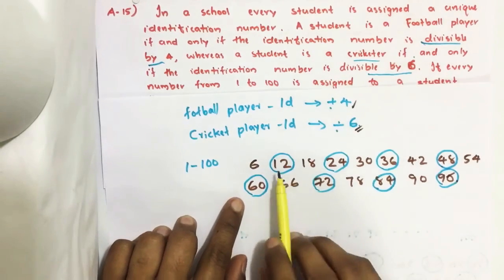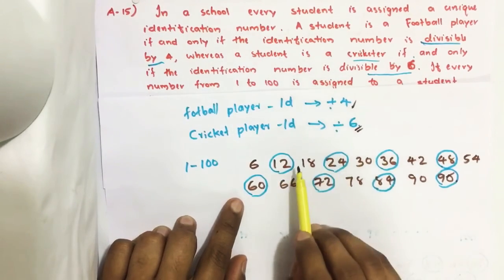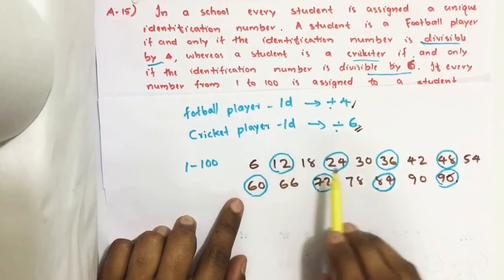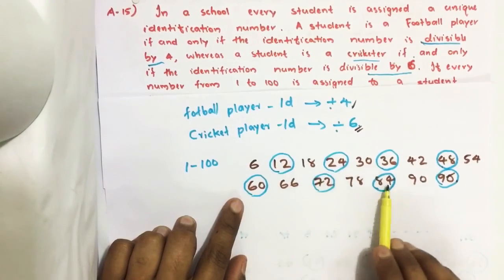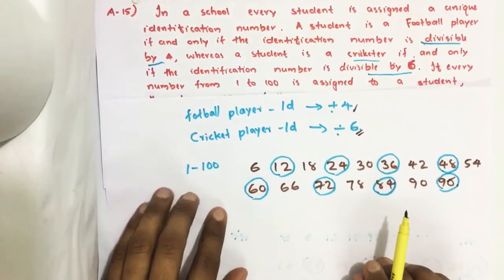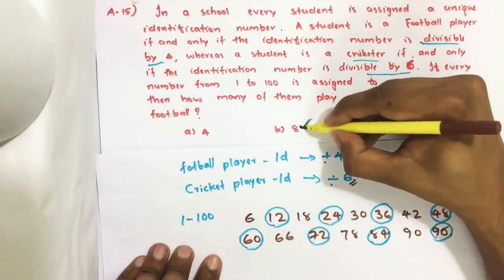So we got how many numbers are divisible by both 6 and 4: 1, 2, 3, 4, 5, 6, 7, 8. Eight numbers are there. So our answer is 8.